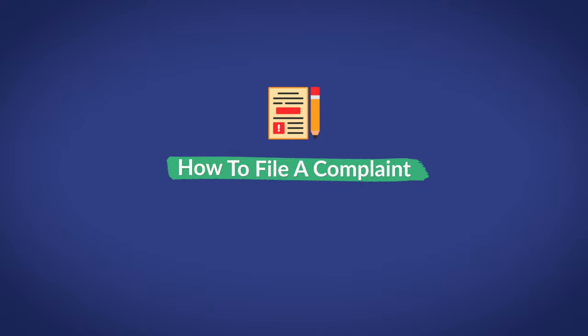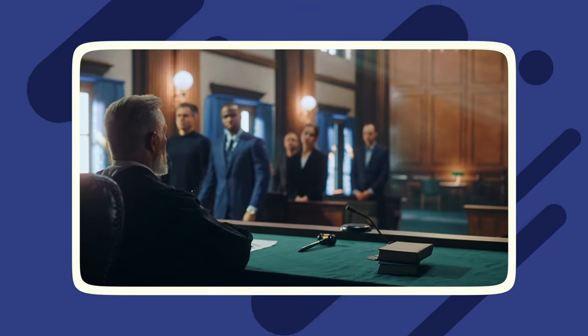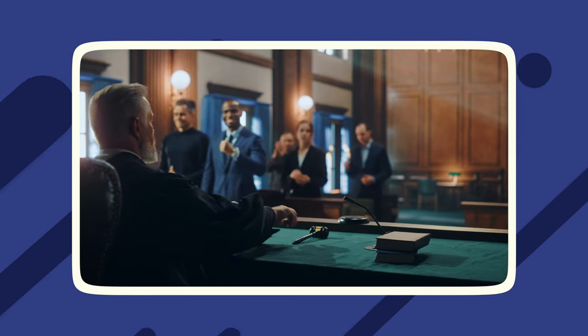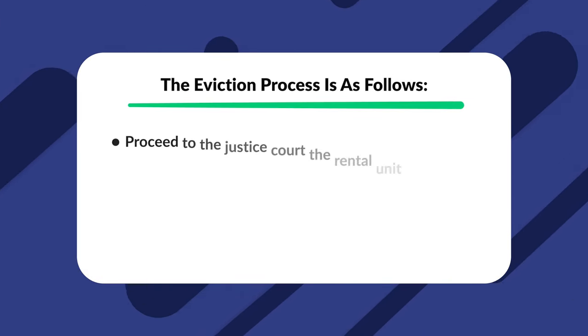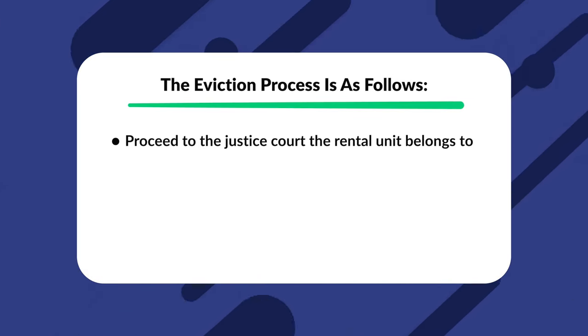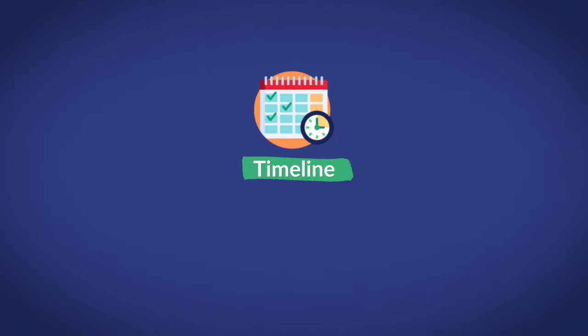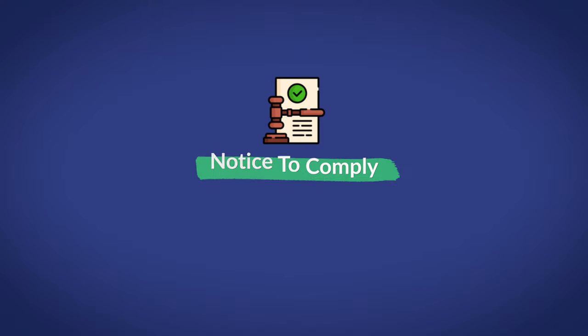How to file a complaint: the eviction process can only begin after the issuance of the appropriate written eviction notice. Enough notice time must have been allowed before filing for eviction. The eviction process is as follows: proceed to the justice court the rental unit belongs to, file a complaint, and pay the fees. The timeline is about seven to 30 days from the issuance of the notice to vacate or quit. Before filing an eviction with the court, you need to issue the tenant a notice to comply.